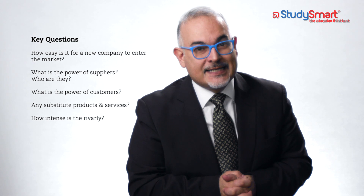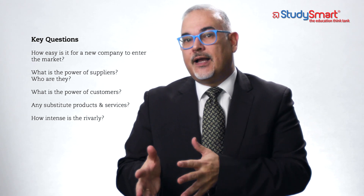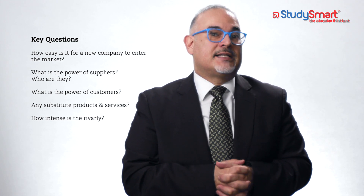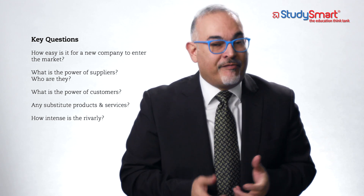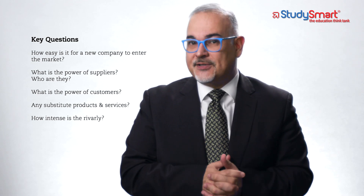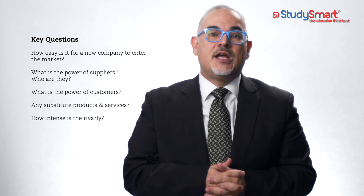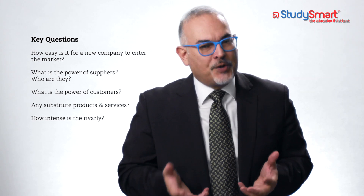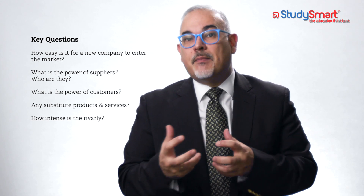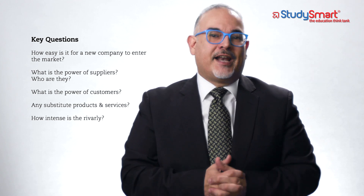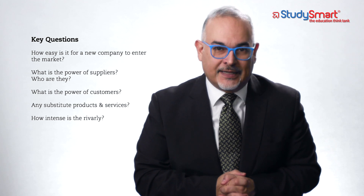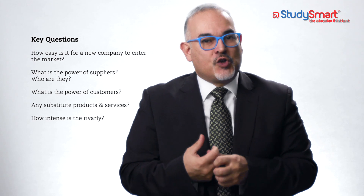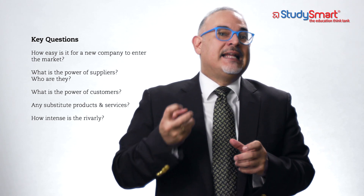The fourth element has to do with substitute products — something that does the same thing in a different way. A good example is the telecom business: we used to pick up the phone and make calls, then Skype came along as a substitute product, and now WhatsApp is a substitute product taking money away from telecom companies. They're getting some revenue back from internet connections and network access, but substitutes are taking away money from what they were offering.